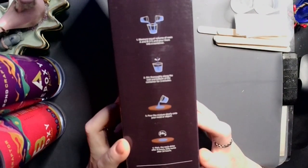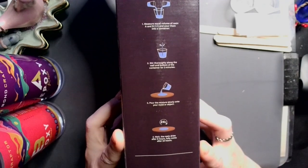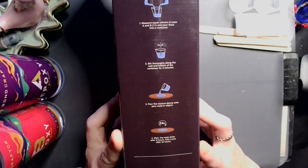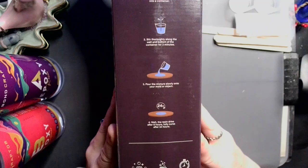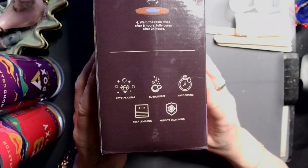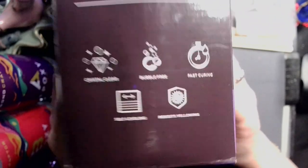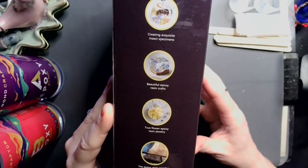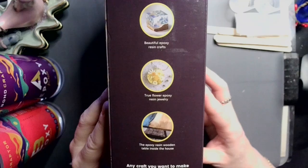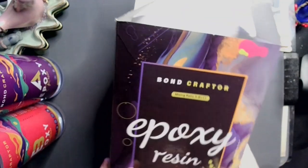On the box, let's read it. Instructions. Measure equally A and B. Does not say by weight or volume. But since they both weighed the same, I'm going to guess it's either or. Stir along the walls and bottoms for three minutes. Pour into mixture container of choice. Wait till the resin dries after eight hours. Fully cures after 24. Crystal clear, bubble free, fast curing, self leveling, and resists yellowing. Creating exquisite insect specimens. Okay, so if you're an entomologist, there you go. Epoxy resin crafts, flower epoxy resin jewelry, tables, any craft you want to make. So there we go. So that's what's in the box.